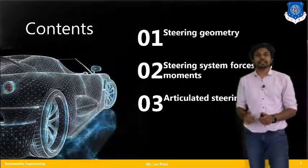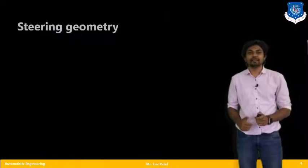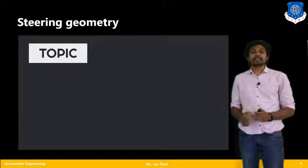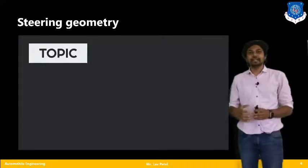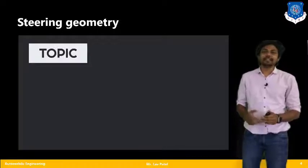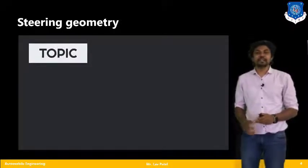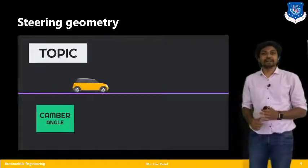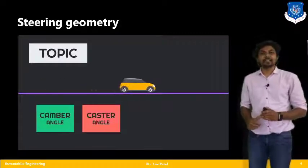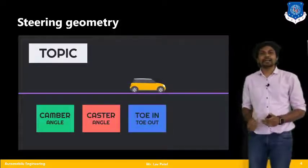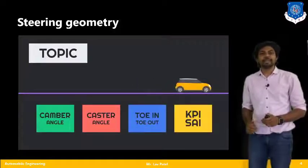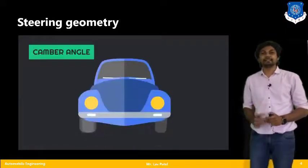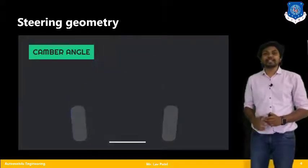Let us begin with the first topic: steering geometry. We have to consider several parameters and functions while designing steering geometry. The four topics we will cover are: camber angle, caster angle, toe-in and toe-out, and KPI and SAI.